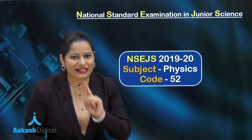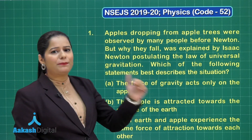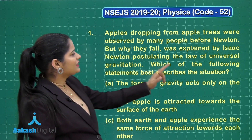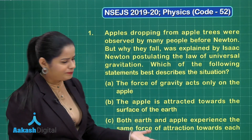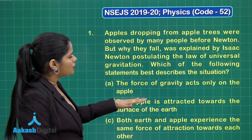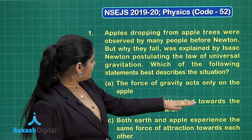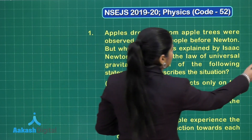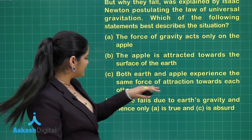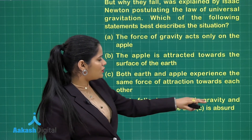The very first question of physics says: apples dropping from an apple tree were observed by many people before Newton, but why they fall was explained only by Isaac Newton postulating the law of universal gravitation. Which of the following statements best describes the situation? Option A: the force of gravity acts only on the apple. Option B: the apple is attracted towards the surface of the earth. Option C: both earth and apple experience the same force of attraction towards each other. Option D: apple falls due to earth's gravity and hence only option A is true and C is absurd.